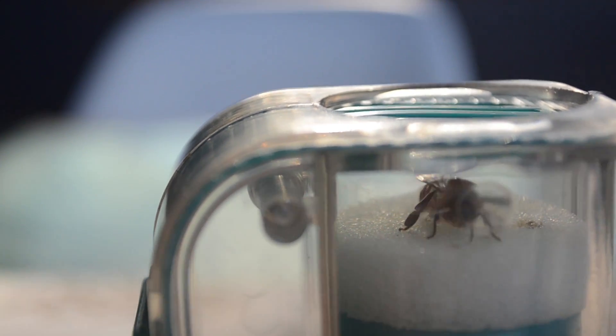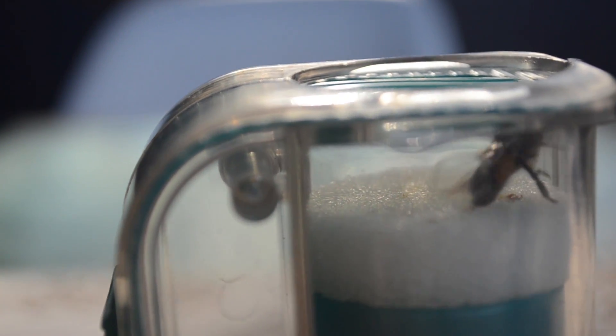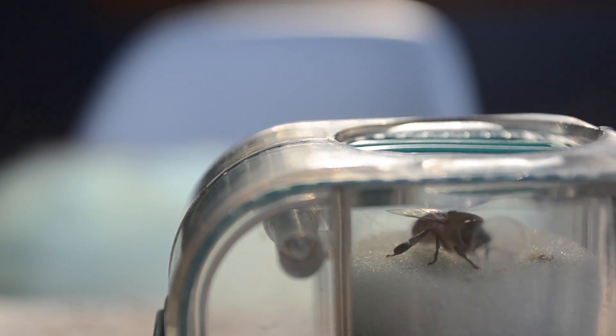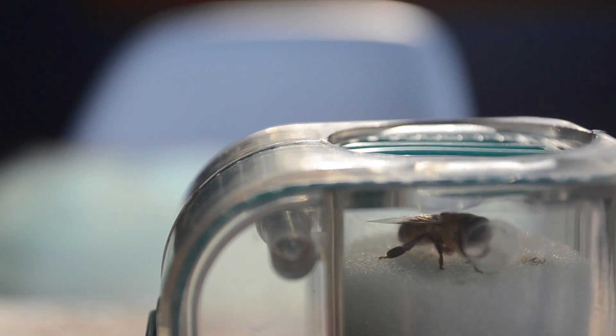This is Henry, Henry the Drone. You can tell he's a drone, or male bee, because he has a wider body and bigger eyes than that of a worker.